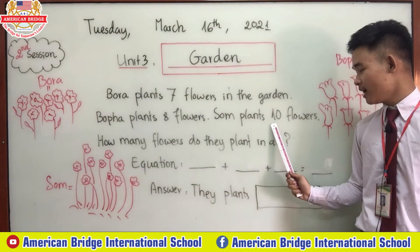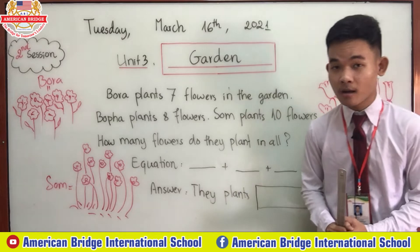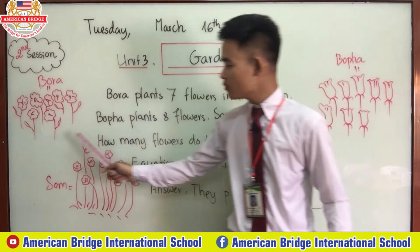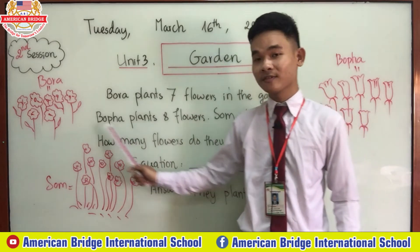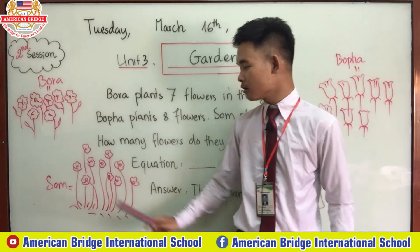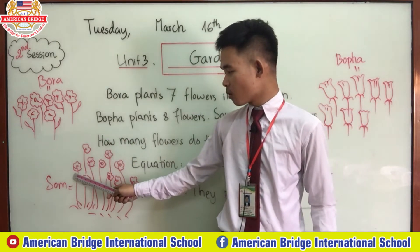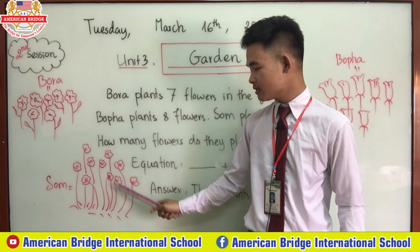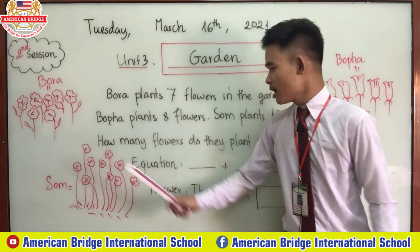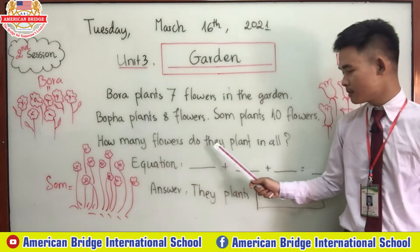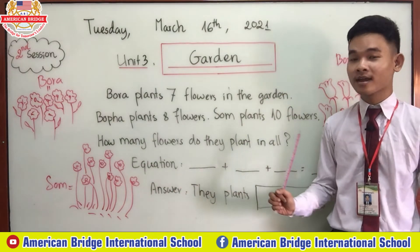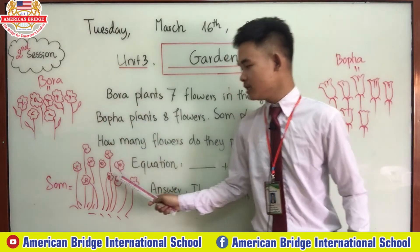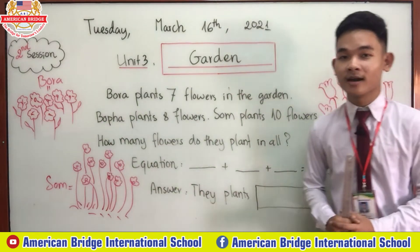Som plants ten flowers. These are Som's flowers. Let's count all together: one, two, three, four, five, six, seven, eight, nine, ten. How many flowers do they plant in all? These, these, these, and these — how many?